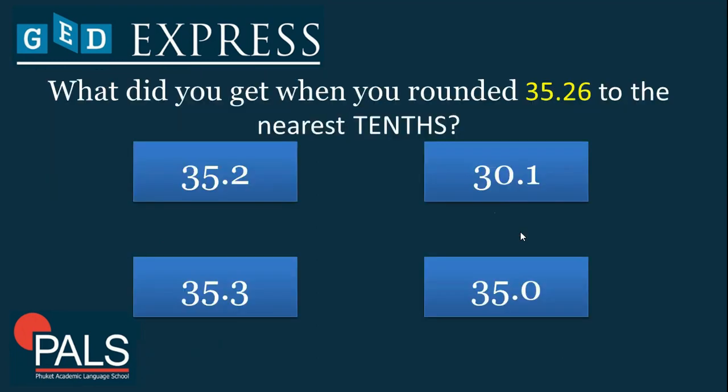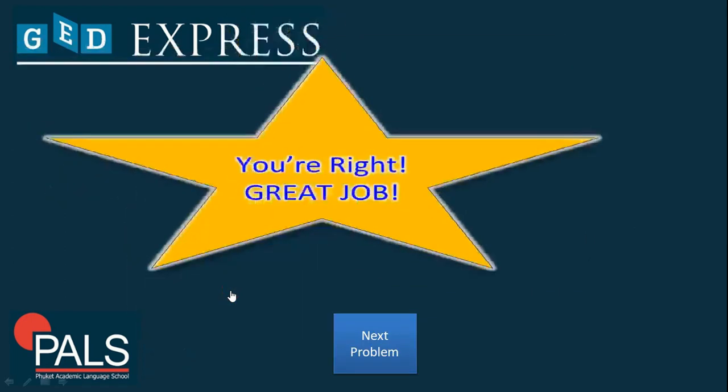Good job! Now let's try this example. What did you get when you rounded 35.26 to the nearest tenths? The answer is 35.3.